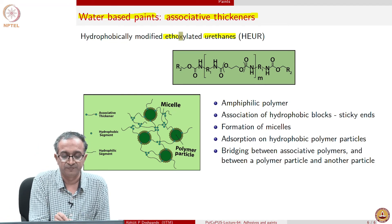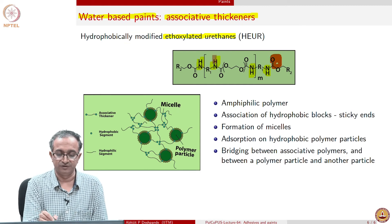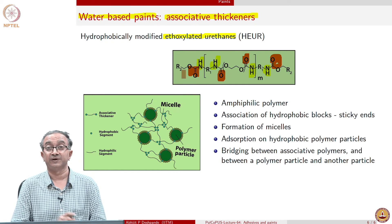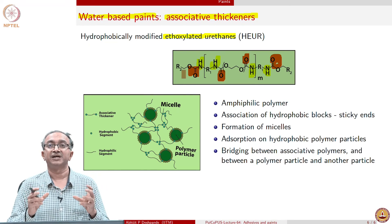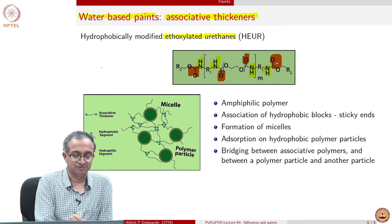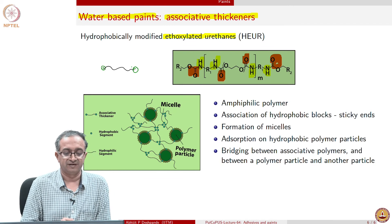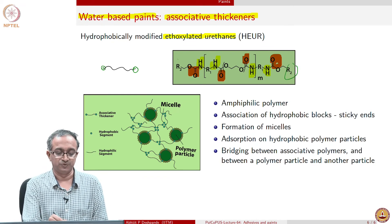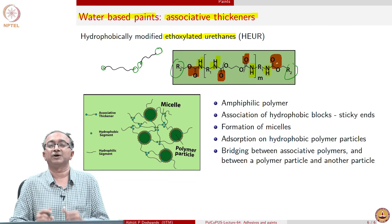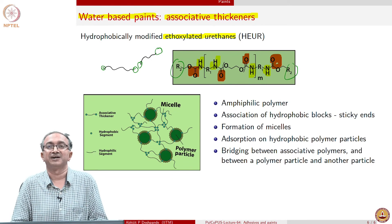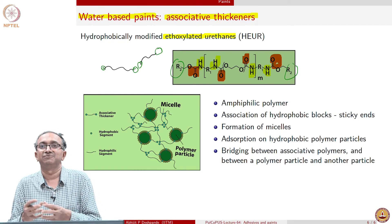These are basically urethanes but they are ethoxylated — so there are urethane linkages but also several ethoxy groups. Because of these varied groups on them, the ends of these macromolecules become sticky. What you have effectively is a macromolecule which has a hydrophobic modification at the end, and overall it may be hydrophilic because of the R1 and R2 groups. Because of this, if you put another molecule of this together, the hydrophobic parts would like to come together — so there is an association between hydrophobic parts. These can also be called sticky polymers — polymers with sticky ends — where the ends which are sticky would like to stick with each other.